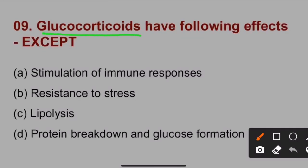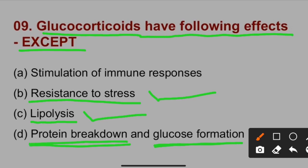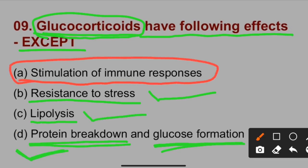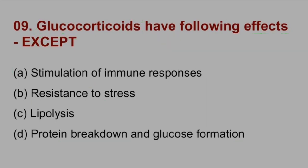Next question: Glucocorticoids have the following effects except — option B, resistance to stress: yes, glucocorticoids provide resistance to stress. They cause lipolysis in adipose tissue, protein breakdown, and gluconeogenesis in the liver. So options B, C, and D are correct about glucocorticoids. However, glucocorticoids do not stimulate the immune response — they decrease or suppress the immune response. So option A is the incorrect statement and the correct answer.